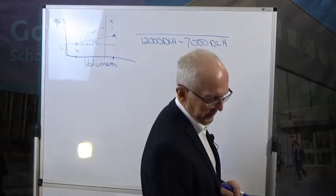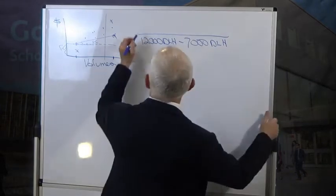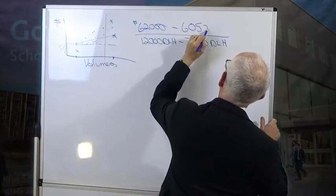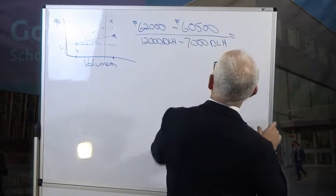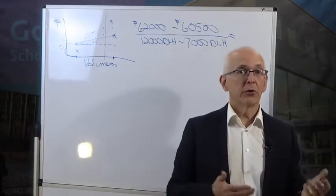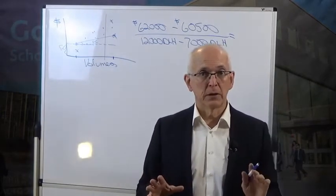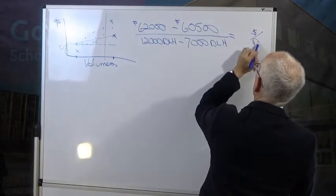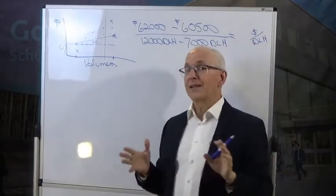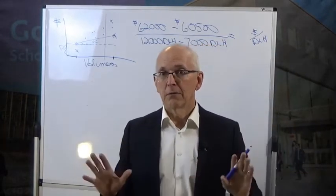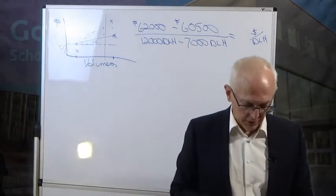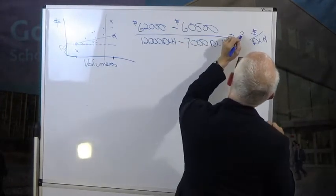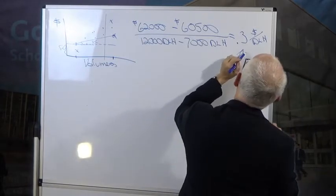So we set up the equation: the difference in cost ($62,000 minus $60,500) divided by the difference in hours (12,000 minus 7,000). The numerator is in dollars, the denominator is in units — so the answer will be in dollars per direct labor hour. The result is $0.30 per DLH. This is our variable cost.